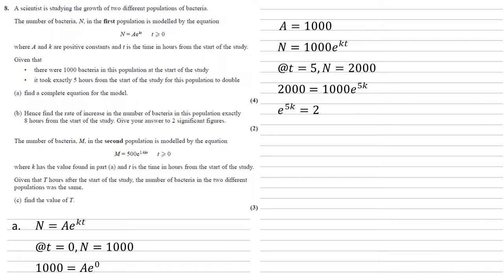We've got e to the 5k equals 2, taking logs of both sides, 5k equals log natural 2, so k is equal to a fifth log natural 2. Putting this back in completes our equation. We've got that n equals 1000 times e to the power of a fifth log natural 2 times t.